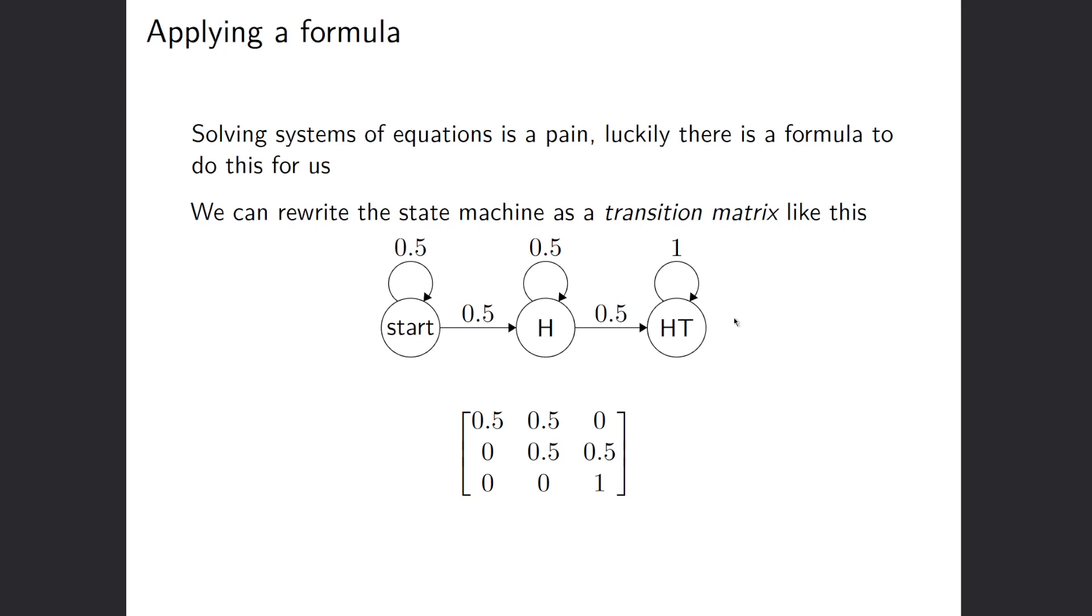So this state machine here, remember from heads tails, becomes this transition matrix. You can think of it like this. We have our states along the rows and also along the columns. So the rows represent the state that we're going from, and the columns represent the state that we're going to. So this top row would be a start row, and this first column would be the start column. So the chance of going from start to start is 0.5.